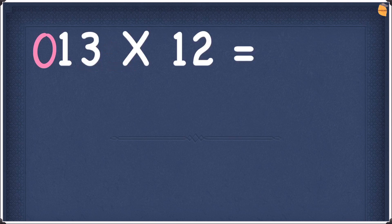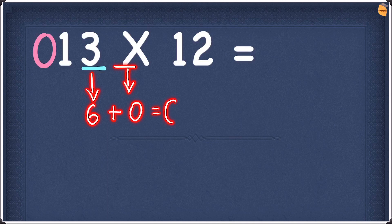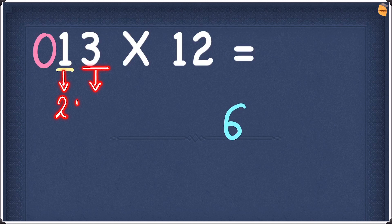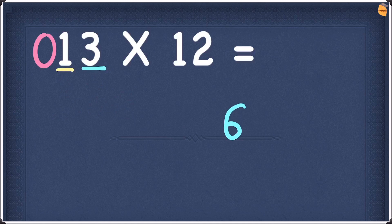First, let's take our first number which is 3. 3 doubled is going to be 6. Add this to the number on the right hand side — we don't have anything, so 6 plus nothing is 6. Write the 6. Moving on to the next digit, which is 1. Double 1 gives you 2. Add this to the number on the right hand side, which is 3. 2 plus 3 is 5. Write this 5 next to the 6.